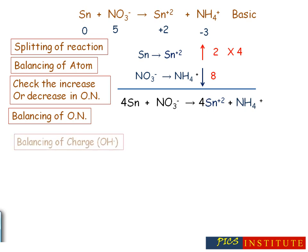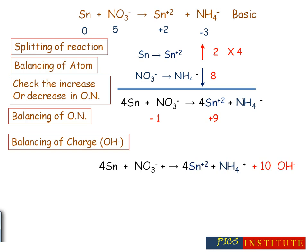The next step, which is different from the previous equation, is the balancing of charge — this time by OH⁻ ion, because the reaction is taking place in basic medium. Check the charge on both sides: it is −1 on the left-hand side and +9 on the right-hand side, so the difference is 10 units. We'll add 10 OH⁻ ions to the right-hand side in order to balance the charge.